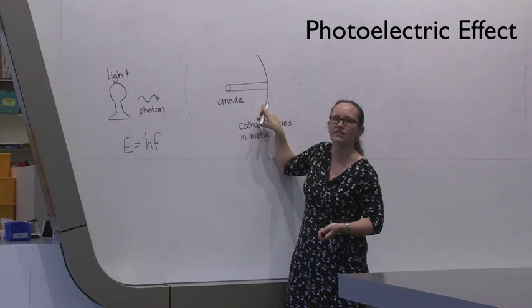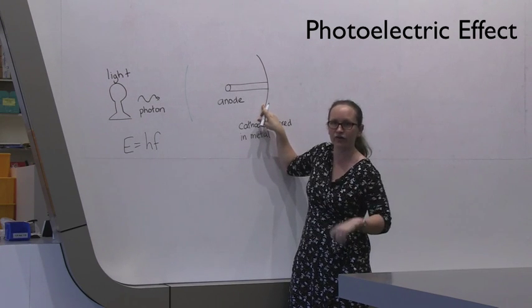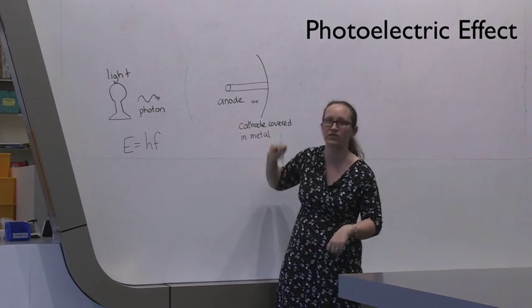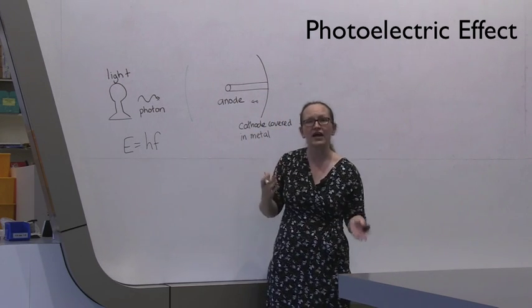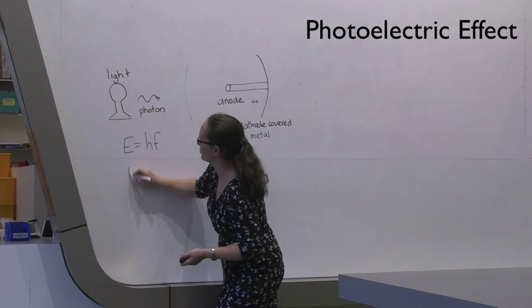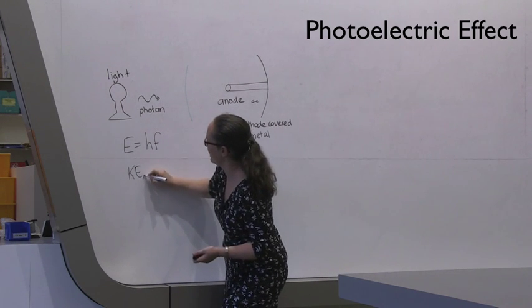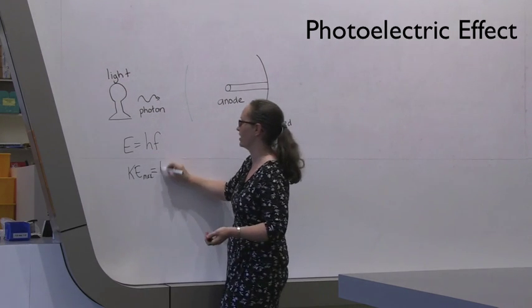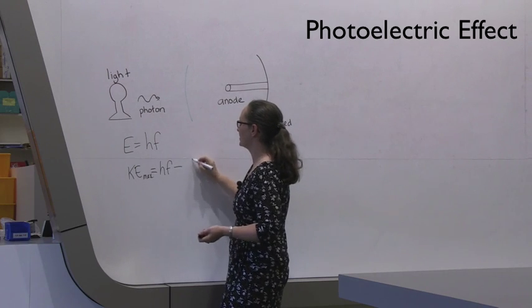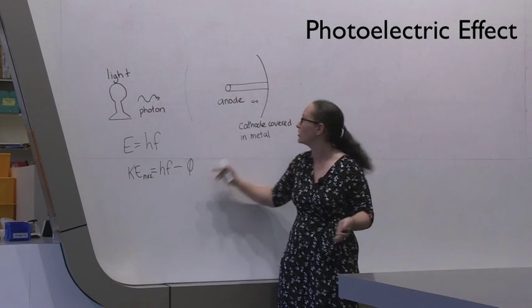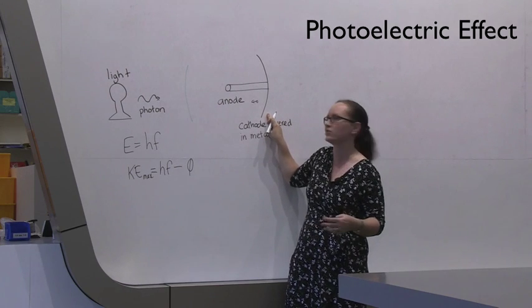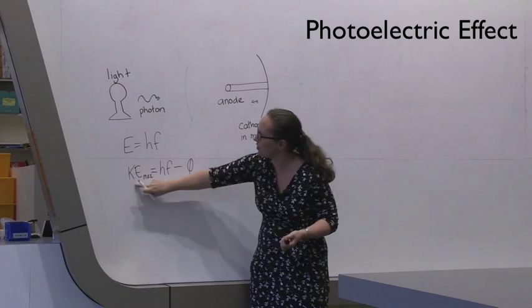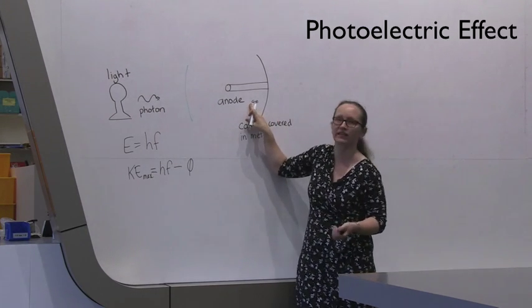When the photon hits the metal here, it can cause an electron to be released. So there's our electron travelling towards the anode. The maximum kinetic energy that electron can have, Ke max, is equal to the energy it gets from the photon, HF, minus phi, which is the work function. So that's how much energy you need to release an electron from the metal. So this is the maximum kinetic energy of the electron here.